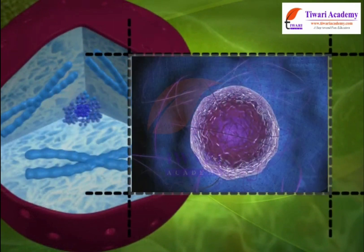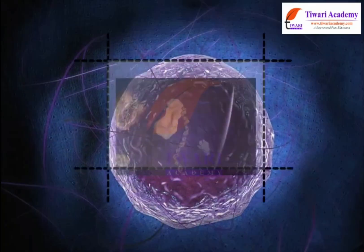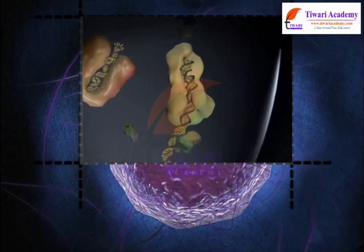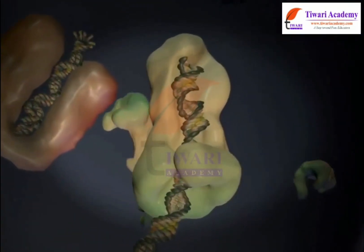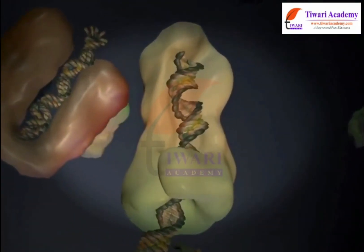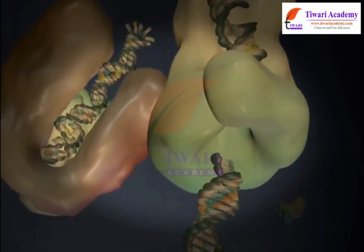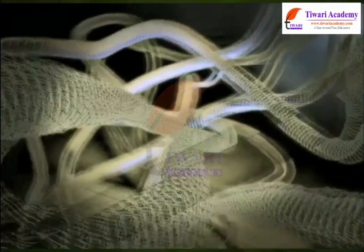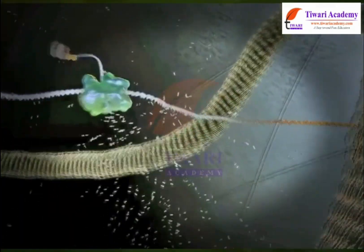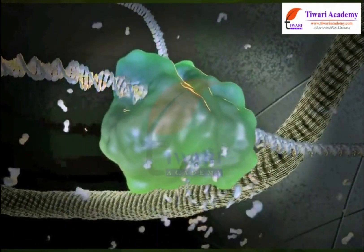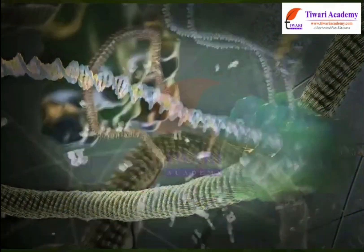The nucleolus is a granular body present within the nucleus and consists of RNA (ribonucleic acid) and protein. The nucleolus is the site of ribosomal RNA synthesis and ribosome subunit assembly.